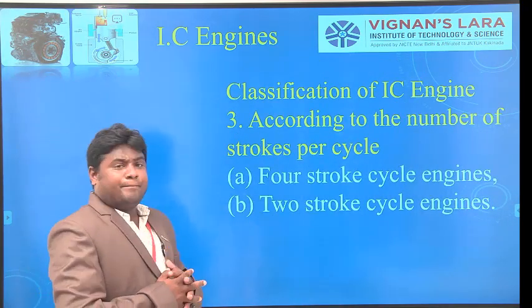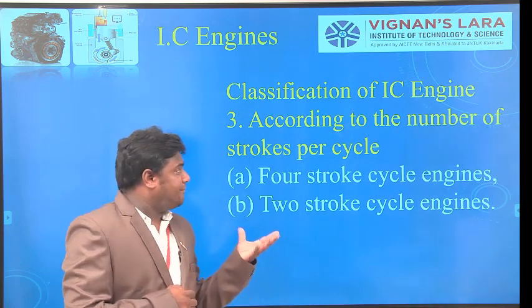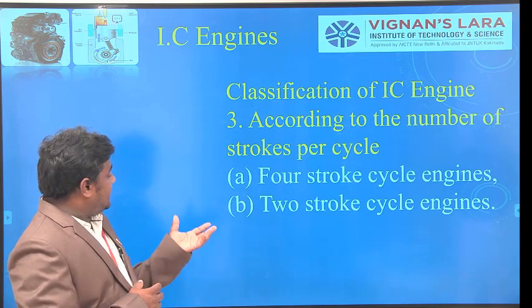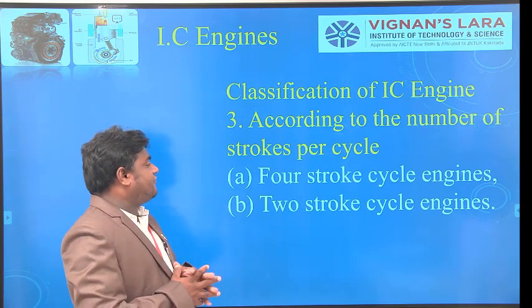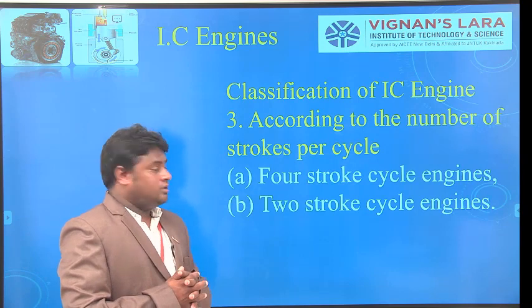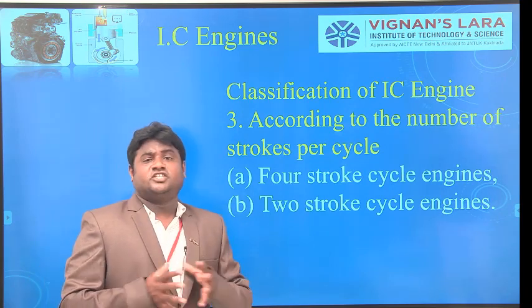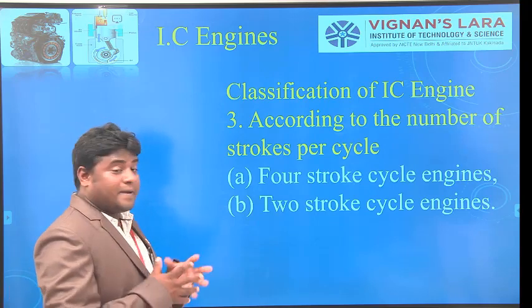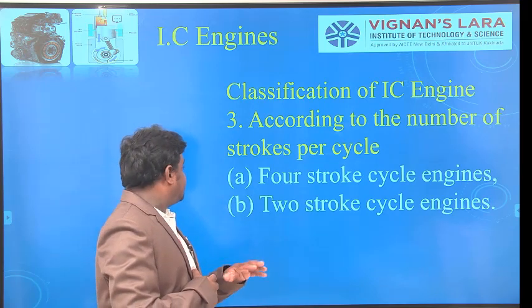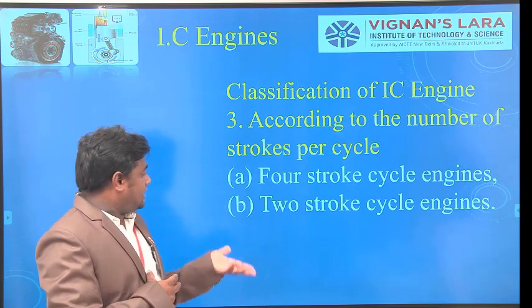According to the number of strokes per cycle, engines are divided into two categories: four-stroke cycle engines and two-stroke cycle engines. In four-stroke engines, which are commonly used in bikes today, the four strokes are: suction stroke, combustion stroke, power stroke (expansion stroke), and exhaust stroke.